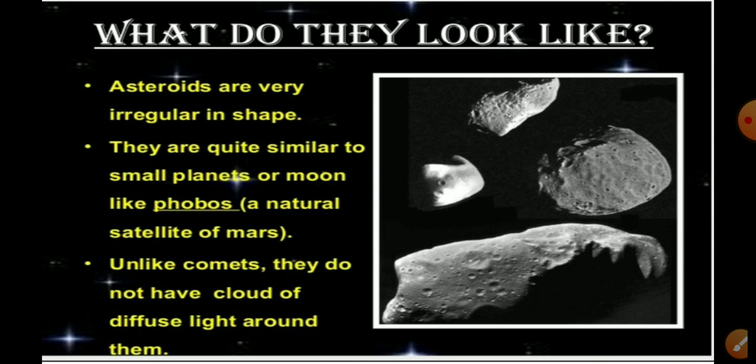Asteroids do not have a cloud of diffuse light around them. They are small objects revolving around the sun, present in the gap between the orbits of Mars and Jupiter.